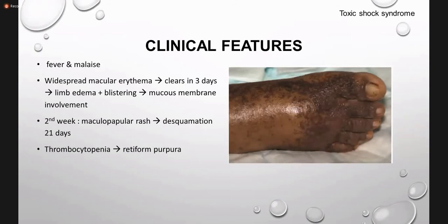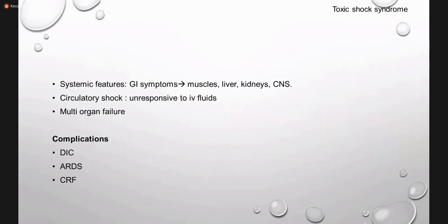There is involvement of mucous membranes. In the second week, desquamation occurs — peeling of the skin at the site of the prior rash. Thrombocytopenia can lead to retiform purpura (net-like purpura). Systemic features include fever and malaise, with involvement of muscle, liver, kidneys, and central nervous system. The patient can have circulatory shock not responsive to IV fluids. If not treated, this condition can lead to multi-organ failure, DIC (disseminated intravascular coagulation), ARDS, and CRF.